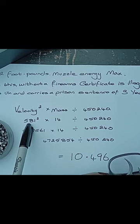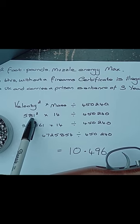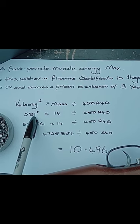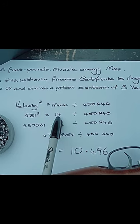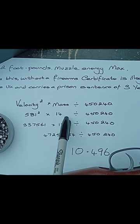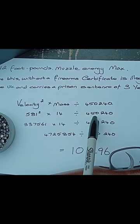So the velocity of my pellet, which I've just measured using a chronograph, is 581 squared times the weight in grains, which is 14, divided by 450240.